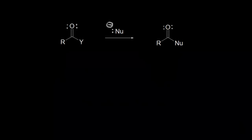Let's look at the general mechanism for a nucleophilic acyl substitution reaction. Here we have our carboxylic acid derivative, and this carbon is our electrophilic portion of the molecule — it's partially positive. The oxygen is withdrawing some electron density. We talked about the relative reactivities of carboxylic acid derivatives in the last video. So that carbon is where our nucleophile is going to attack, and these electrons kick off onto the oxygen.